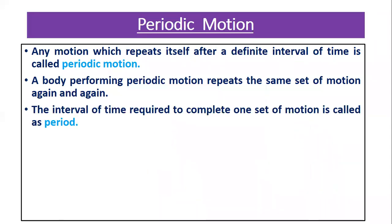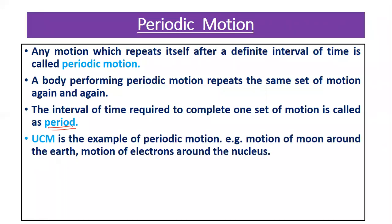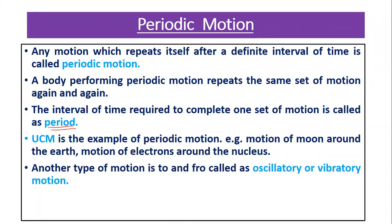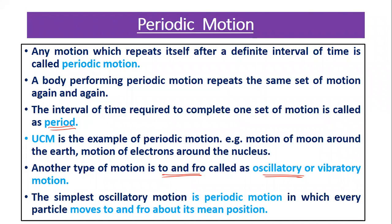The interval of time required to complete one set of motion is called the period. Time required to complete one oscillation or one set of motion is the period. Uniform circular motion is an example of periodic motion. To-and-fro motion, i.e., oscillatory motion, is also an example of periodic motion. The simplest oscillatory motion is one in which every particle moves to and fro about its mean position. Remember: oscillatory motion is periodic, but not all periodic motions are oscillatory.